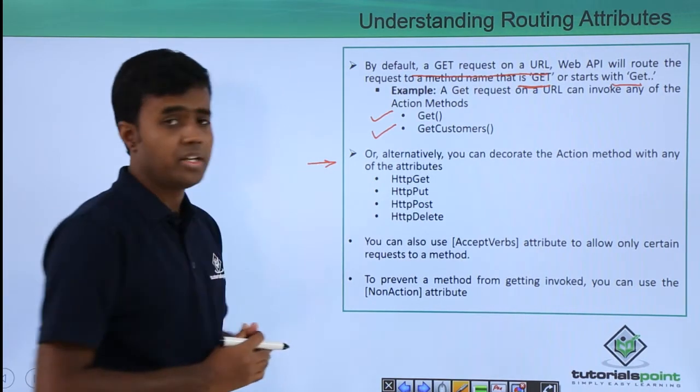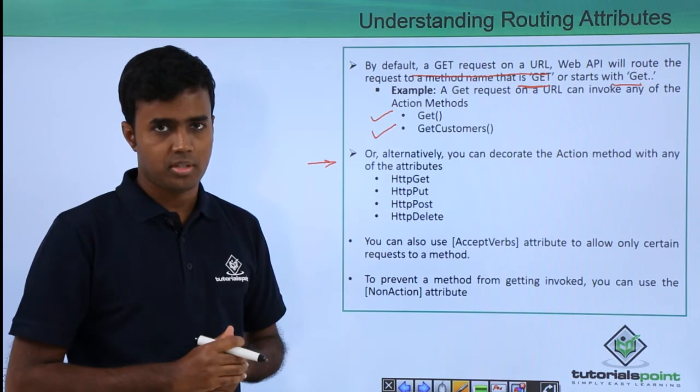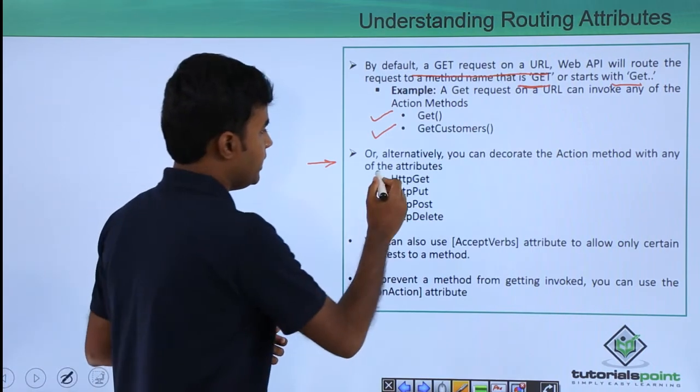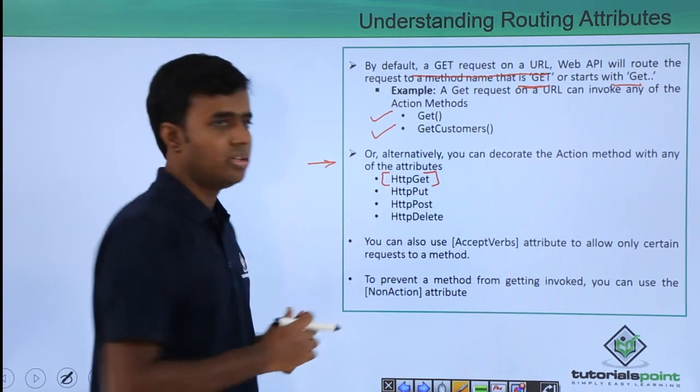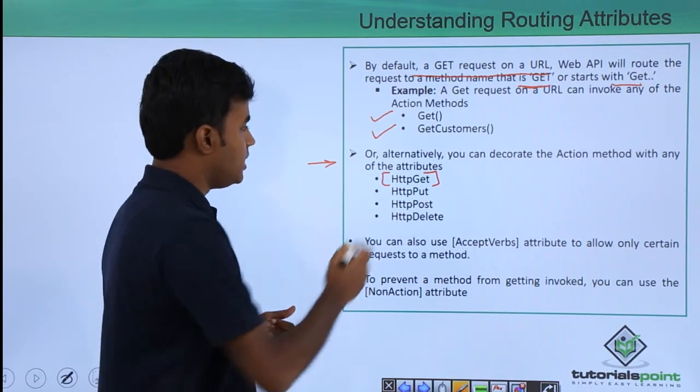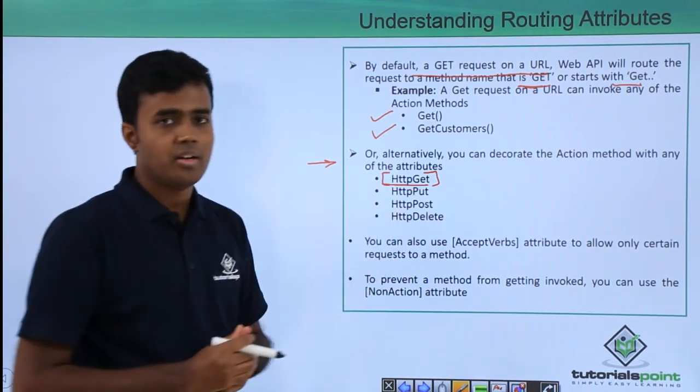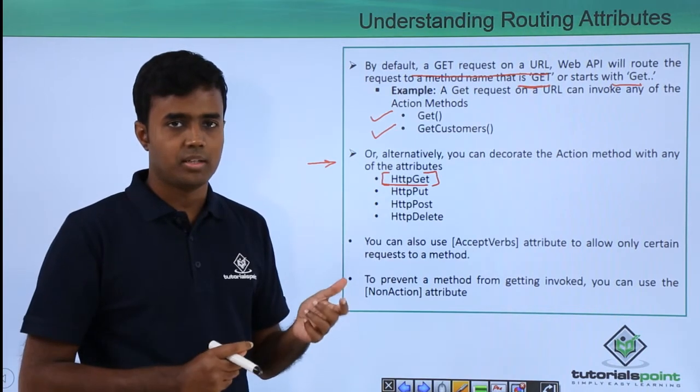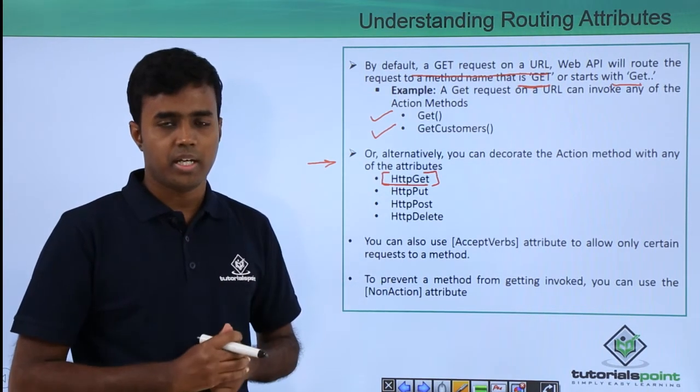Routing attributes are nothing but the decorators that you can use on top of the methods or action methods. These routing attributes specify what are the different methods that are allowed for that particular method to be called.